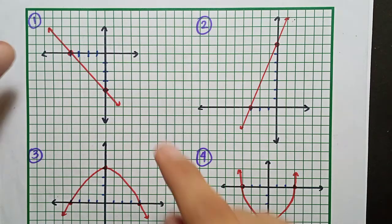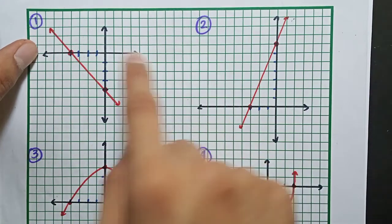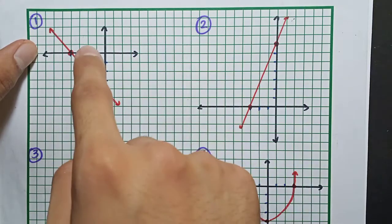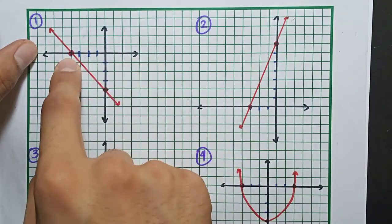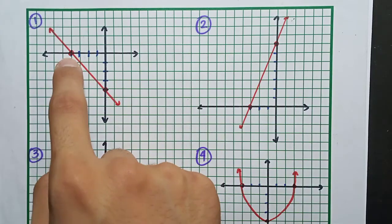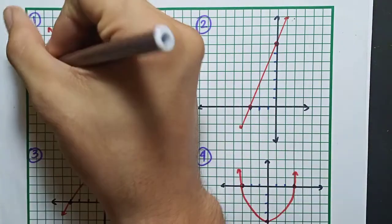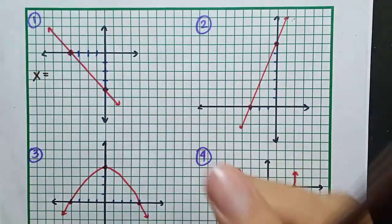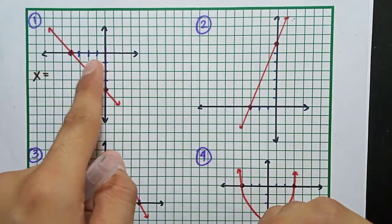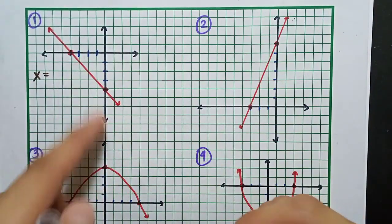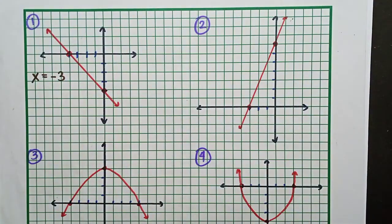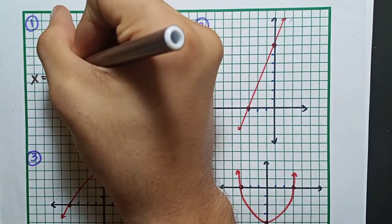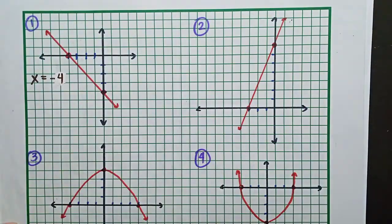This is really easy. The x-axis is horizontal. Where does the point hit the x-axis? Right here. The x-intercept is at negative 1, negative 2, negative 3, negative 4. So the x-intercept is x equals negative 4. That's it.